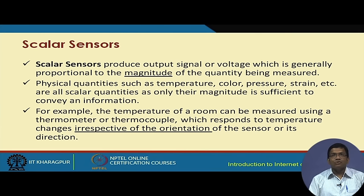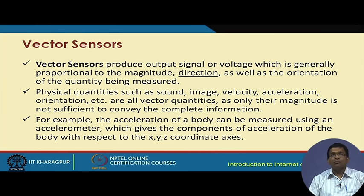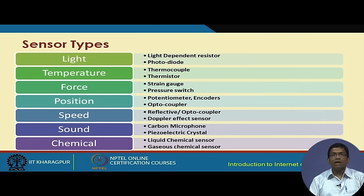Scalar sensors measure only the magnitude of physical quantities such as temperature, color, pressure, and strain — changes in magnitude alone convey the information. Vector sensors produce output proportional to both magnitude and direction. Physical quantities such as sound, image, velocity, acceleration, and orientation are vector quantities. For example, an accelerometer sensor gives outputs in three dimensions: x, y, and z coordinate axes.